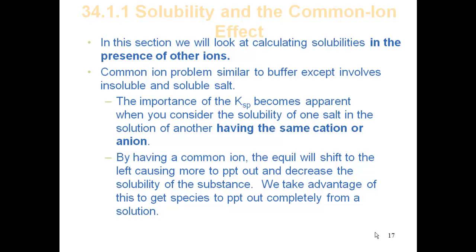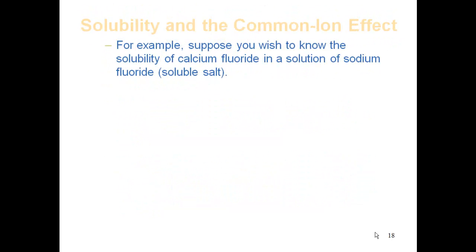We take advantage of this to get species to precipitate out completely from a solution. If I want all the calcium out of a solution, I can use its counter ion — the anion — add more of that by adding a salt, push that equilibrium so far to the left that all that calcium will precipitate out as a solid. We can get the solubility all the way down to zero if we have that ion in solution.